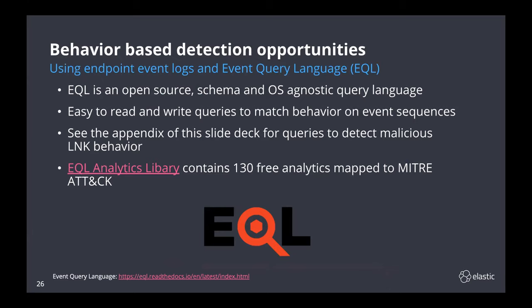Given this presentation is only 30 minutes, I don't have enough time to go into detail about the behavior-based detections for malicious links. Elastic's open-sourced Event Query Language, EQL, was originally created for security detection and threat hunting use cases and is currently being integrated with the Elastic Stack. It's easy to learn and write queries, and you can query on sequences of events for different event types. In the appendix of these slides, I've included some behavior-based detections for malicious links. You can also check out the EQL analytics library — there are about 130 free analytics for detection, all mapped to the MITRE ATT&CK matrix.